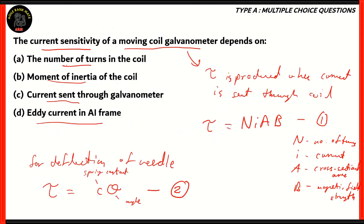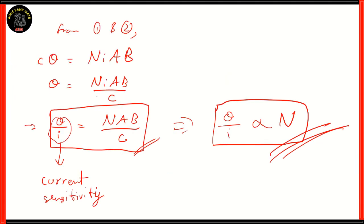The current sensitivity does depend on the number of turns in the coil, so option A is the correct option. Moment of inertia is not represented; current sent is not on the right-hand side; and eddy current is also not relevant. Option A — the number of turns in the coil — is the correct answer. We found this by equating both torque equations: the first shows torque dependent on current and number of turns, the second shows angle of deflection from torque, and together they give θ/I = NAB/C, confirming current sensitivity is directly proportional to number of turns.